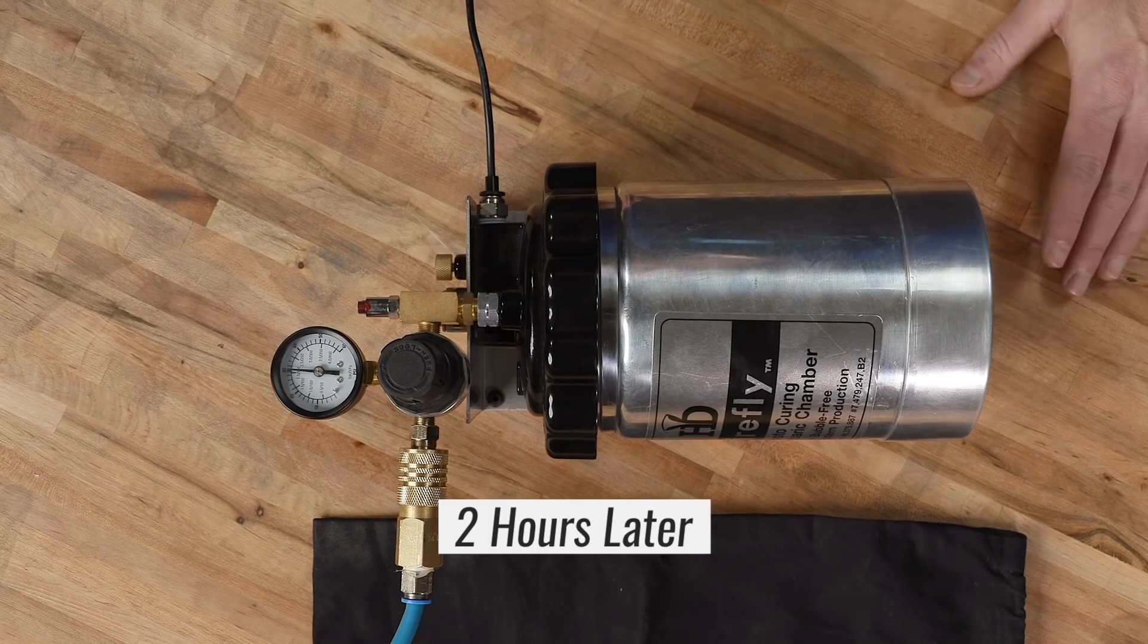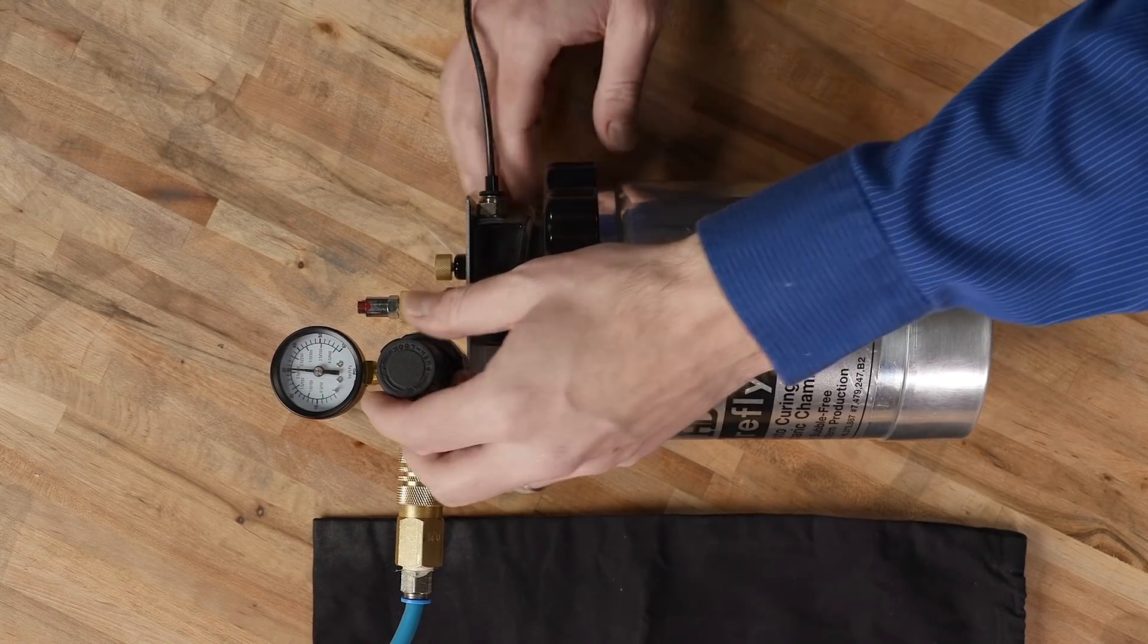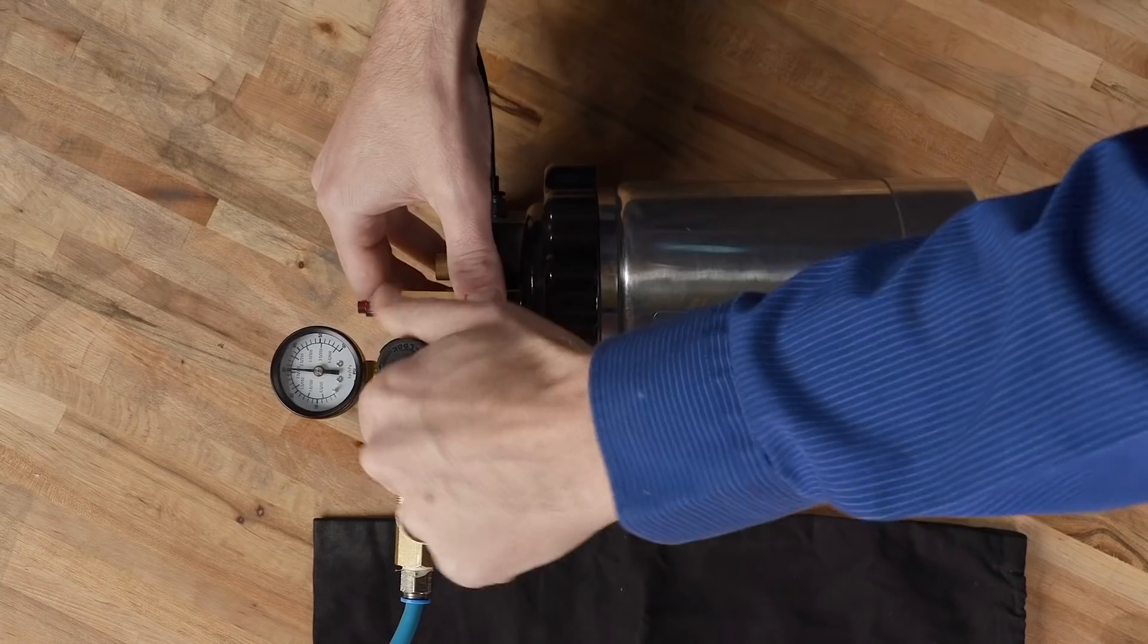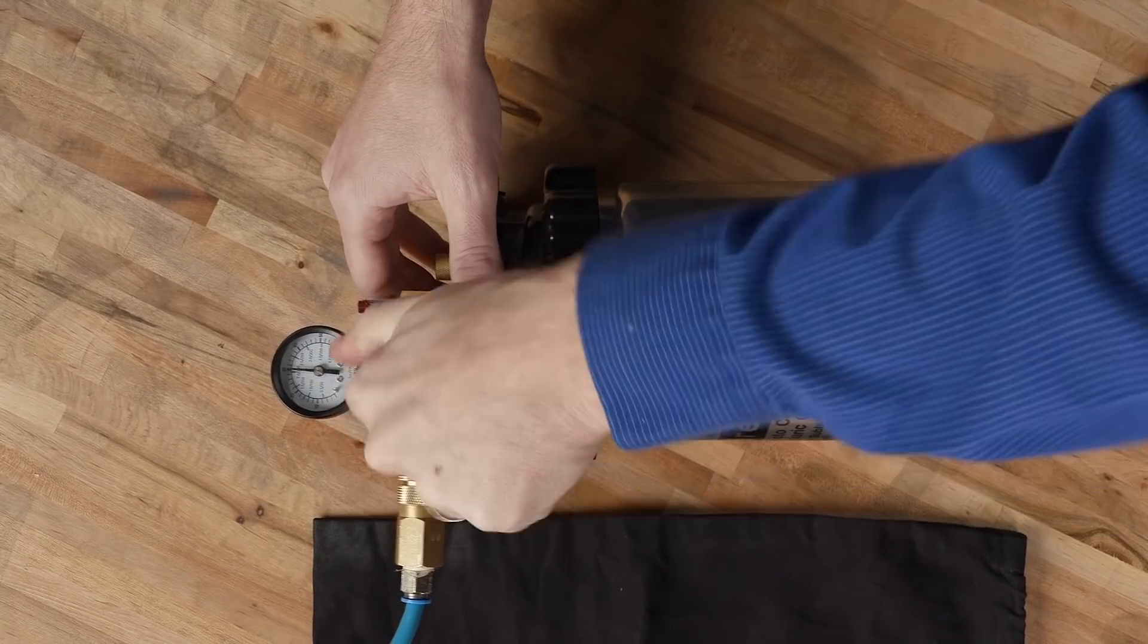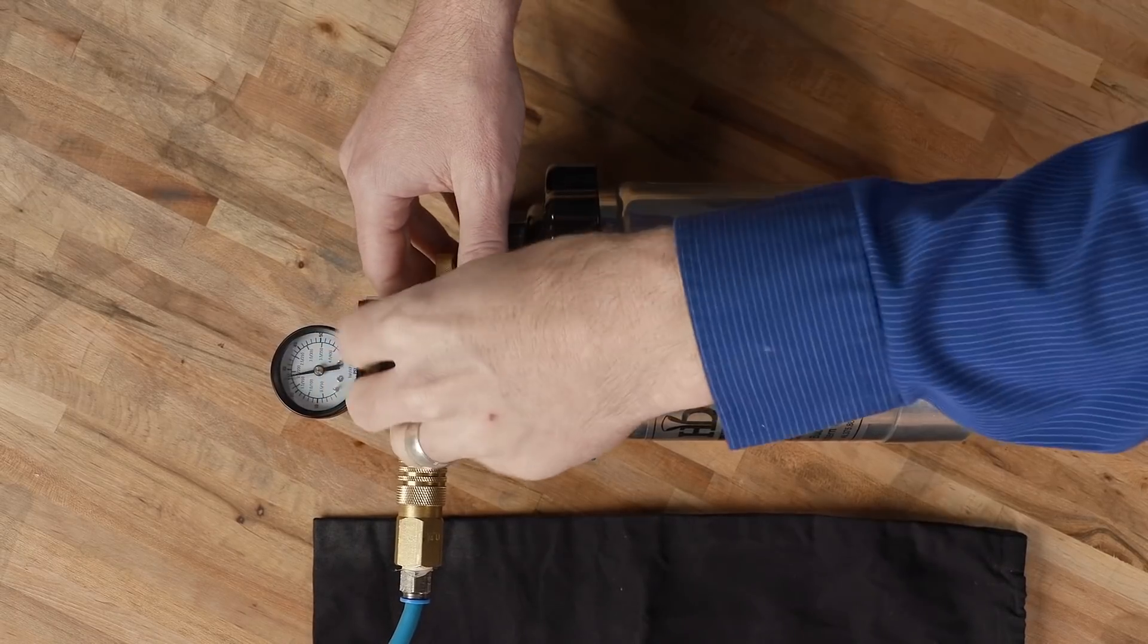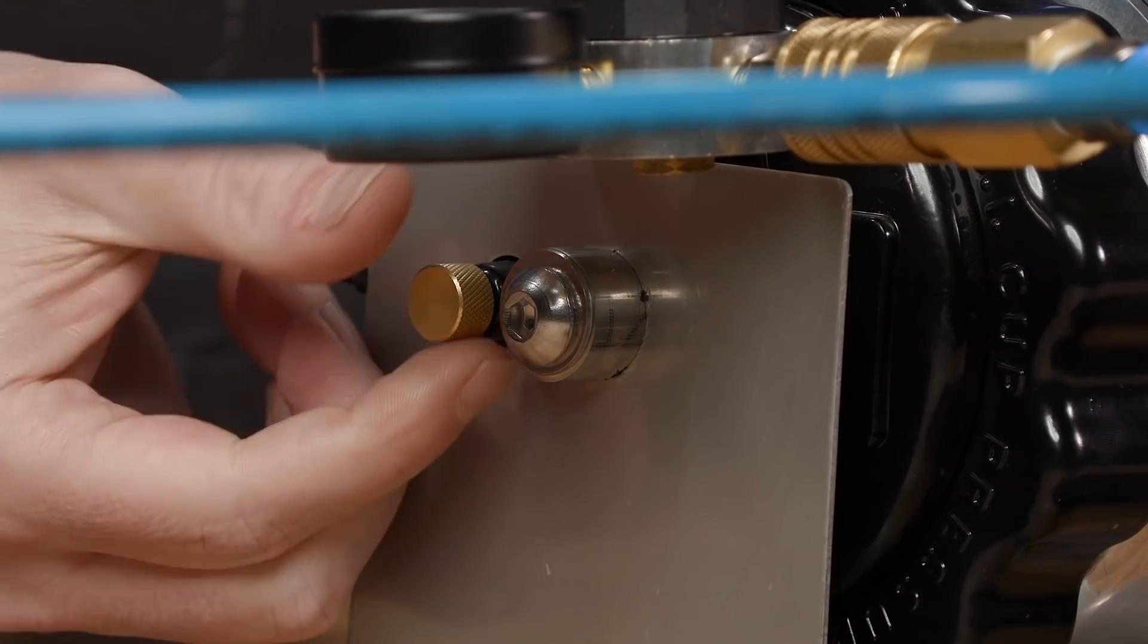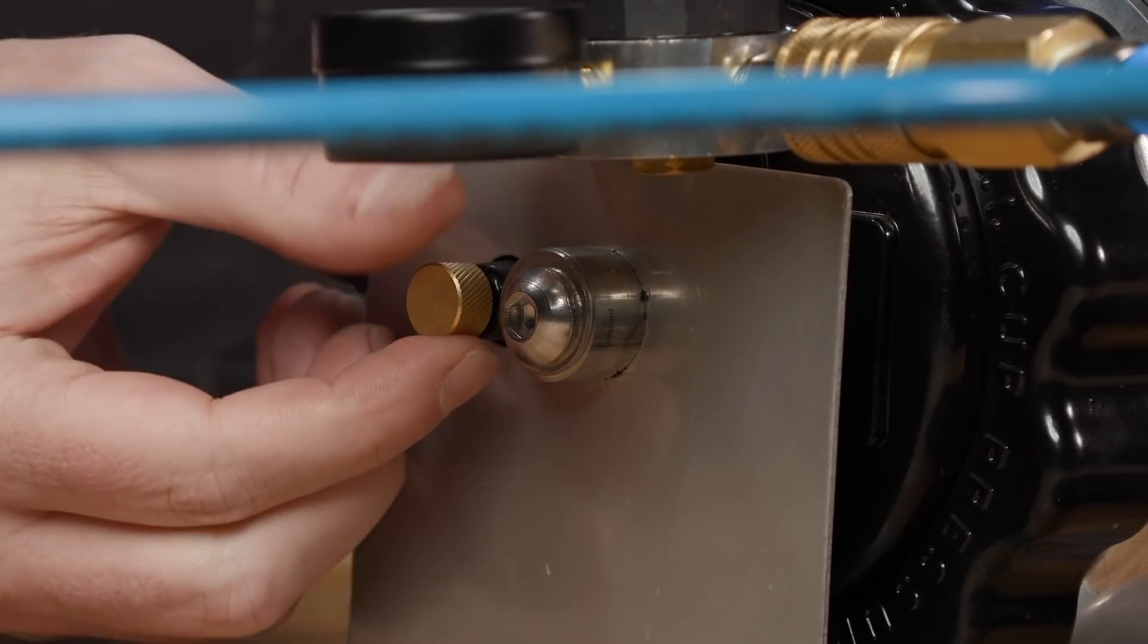After your two hours are up, go ahead and unplug the machine from the wall and release the pressure from the Firefly. So the first thing I'm going to do is release the pressure from the compressor by turning this counterclockwise. And then I'm going to release the pressure from the chamber by turning this little brass gnarled screw.